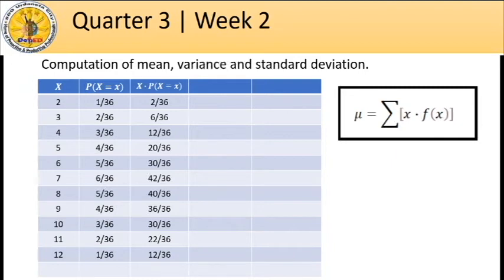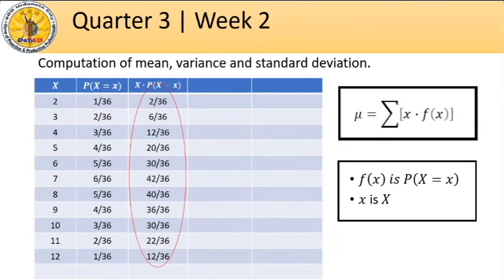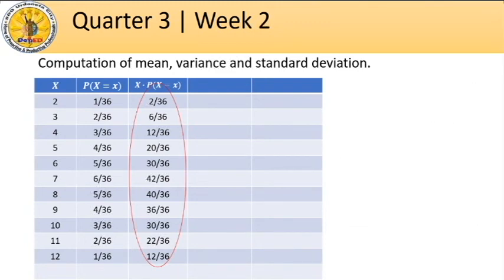Then we will use the formula for the mean. The formula looks so complicated, but trust me, these are just simple arithmetic. The mean, denoted by the Greek letter mu, is equal to the summation of x times f of x. We have done a little change of notation here. f of x pertains to the probability of a random variable x, and x are the values of a random variable. So the mean is simply equal to the sum of all the values in our third row. This will yield to mean equal 7.